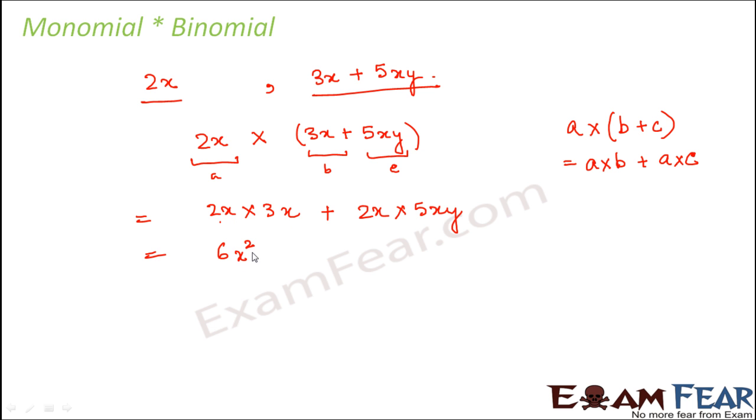Similarly here also it is like multiplying two monomials, so first coefficients 2 into 5 is 10, and then the algebraic factor, so x into x is x², into y is x²y. So 6x² + 10x²y would be the product. So it's pretty simple, right? It is just that you apply the distributive law. Once you have applied the distributive law, you will end up multiplying monomials with monomials.